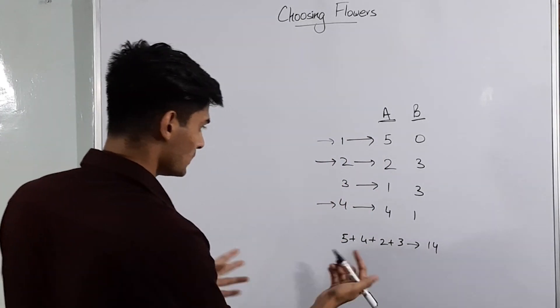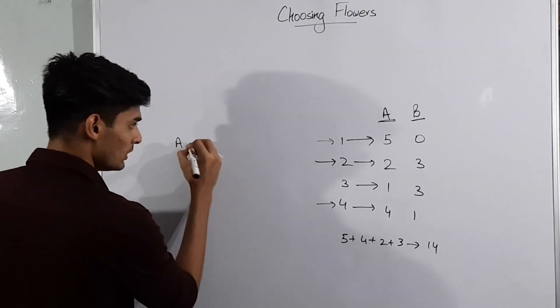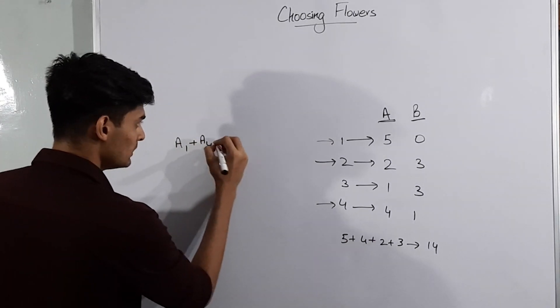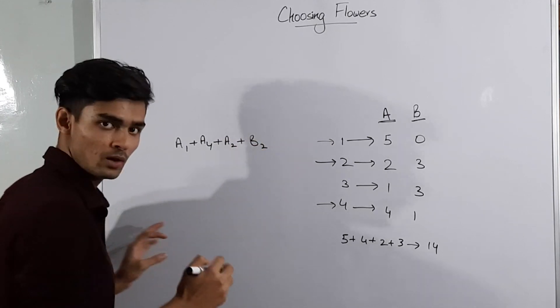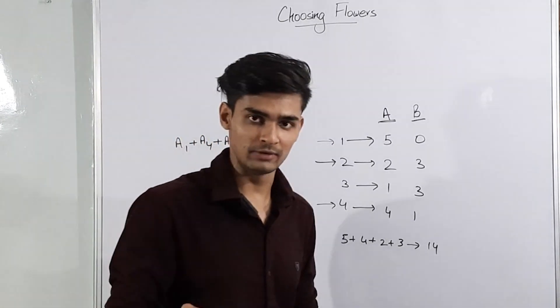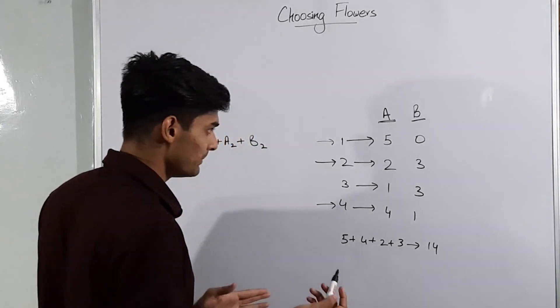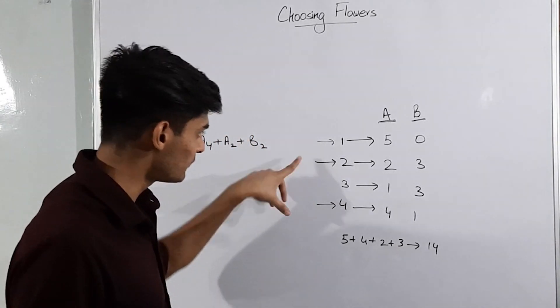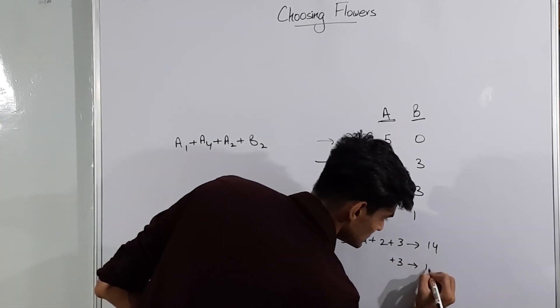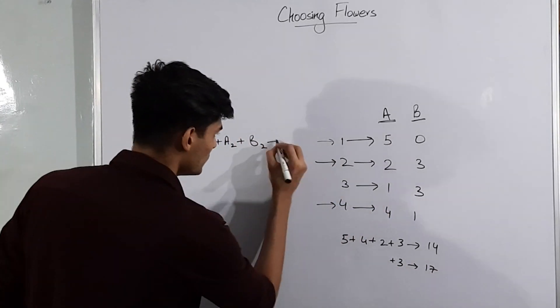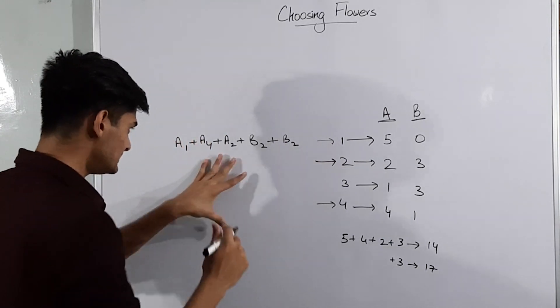Now let's see what is going on here. So basically we had A1, then we had A4, then we had A2 and then we had B2. Now what if we had to select 5 flowers from this? So basically if we see we would have taken one more flower from the second type only, that means A plus 3 and making an answer of 17, and that means one more from B2.